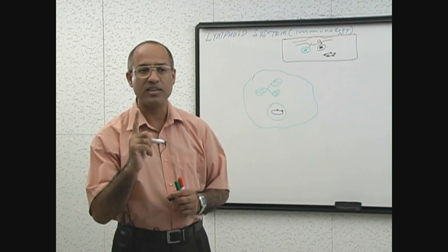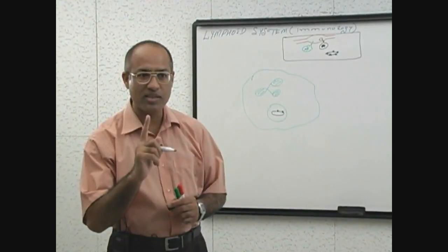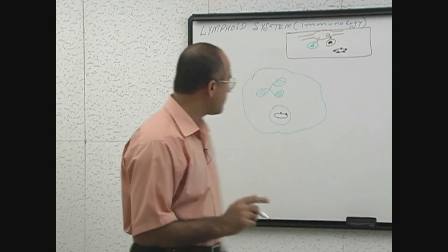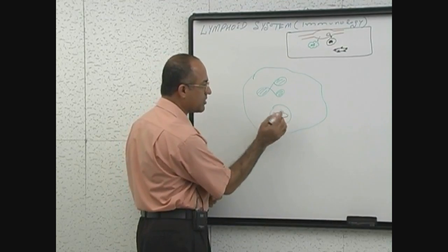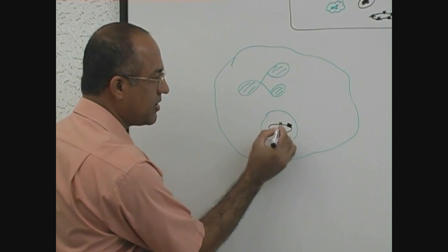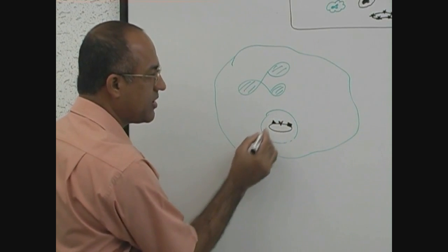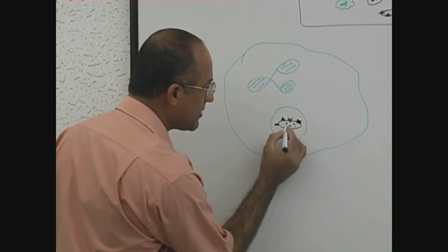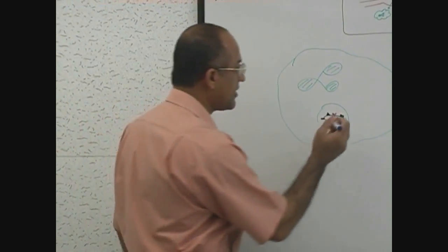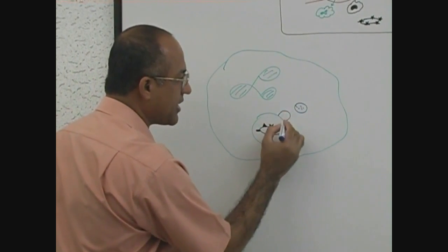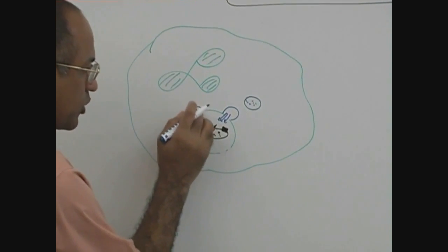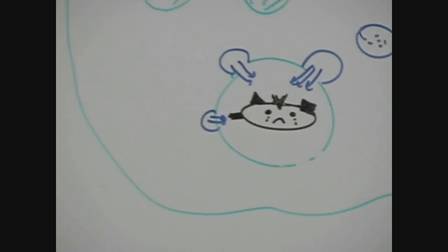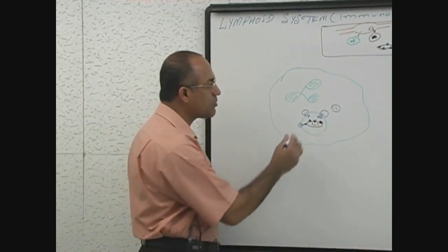Against one type of bacteria, multiple types of antibodies can be produced — because one bacterium carries multiple types of antigens. This bacterium has been captured and phagocytosed. The neutrophil will start emptying its lysosomal granules into the phagosome, releasing lysosomal products — especially destructive enzymes — and those enzymes will start digesting the bacteria.